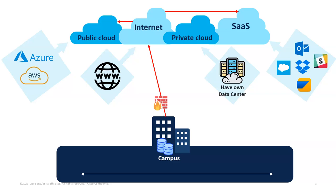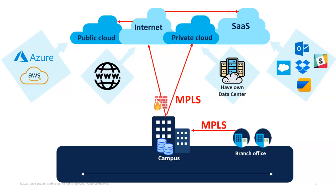How did we get here? We had a campus, we had a firewall, everyone went through that - it worked well because all our data was housed in one location. We moved to private cloud, usually a direct connection or MPLS - on your own network, fairly secure, fairly expensive. Then we got branch offices with MPLS. Then remote workers arrived with VPN - while it worked, it was slow and clunky and nobody really liked it. You had that funnel effect where you had to go through the main office to get to any application.